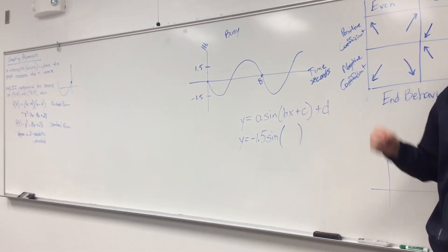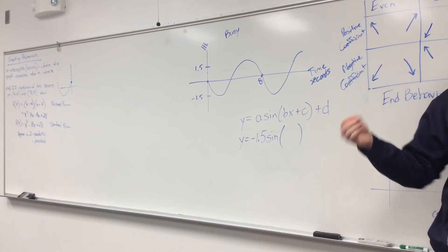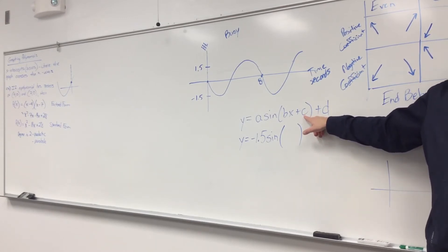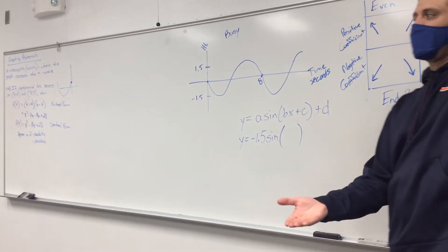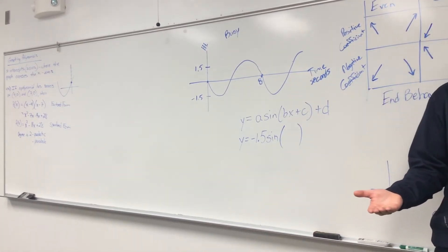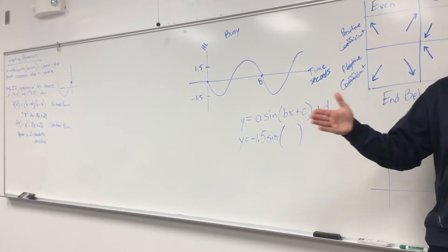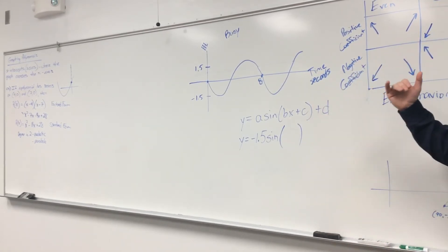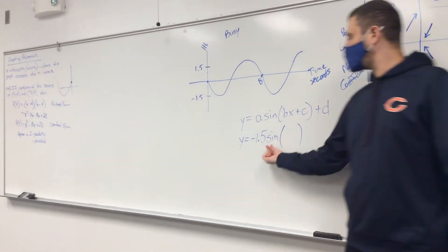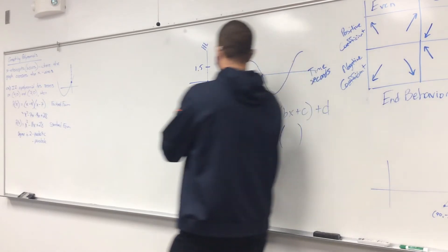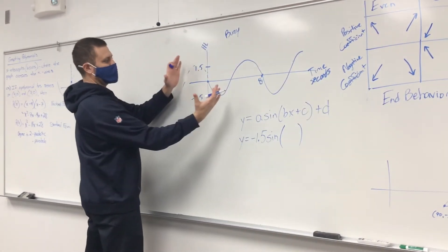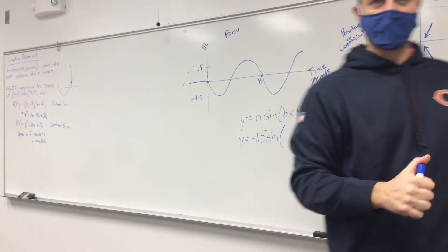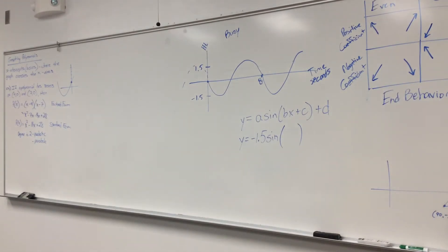I typically try to pick the right trig function so I don't have a phase shift. So if the graph starts in the middle, I use sine. Could I use cosine? Yes, but then I'm going to have to have a phase shift. If the graph starts at the top or bottom, I'm going to use cosine. I could use sine, but again, then I'm going to have to apply a phase shift. The middle here is 0, so the D value will be 0. We could use cosine, but if we use cosine, basically the original cosine starts here, I'd have to shift it left so far. And I don't want to mess with that.